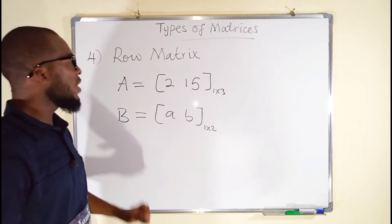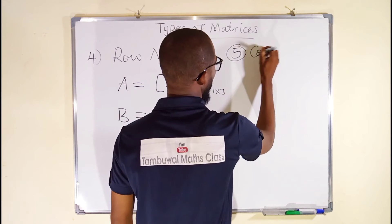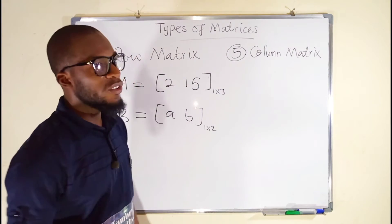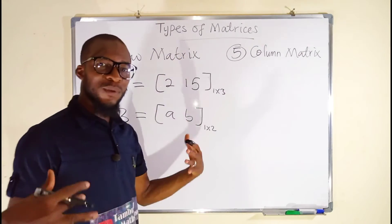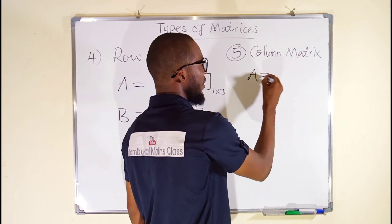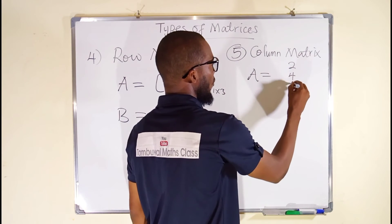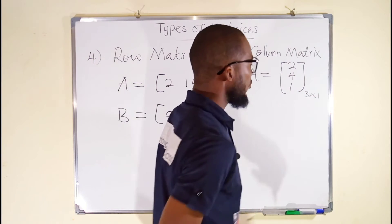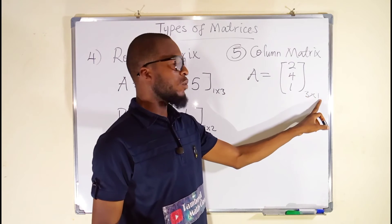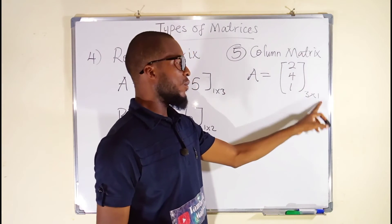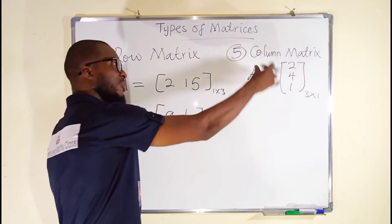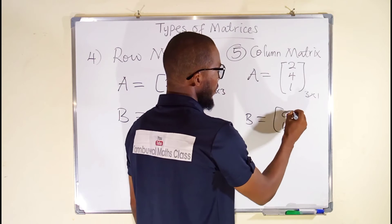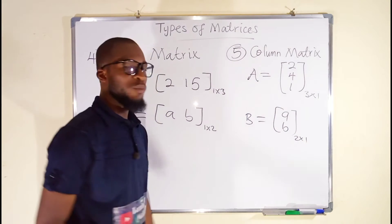Let us move on to another one, which is a column matrix. A column matrix is a matrix that has a single column, irrespective of the number of rows in that matrix. For example, if we have matrix A as [2; 4; 1], you can see this is a matrix with a single column. You have to start from number of rows followed by the number of columns, so we have three rows followed by a single column — this is a three-by-one matrix and it is a column matrix. Matrix B as [A; B] is also a two-by-one matrix and is said to be a column matrix.